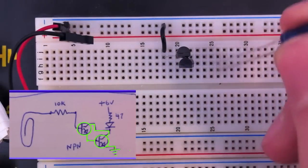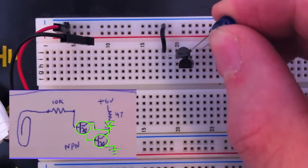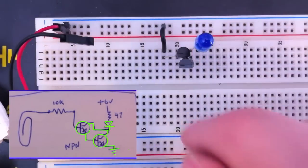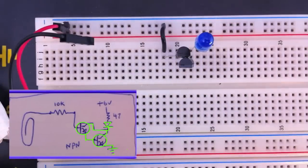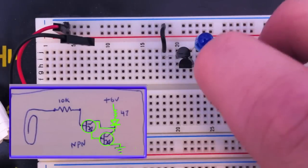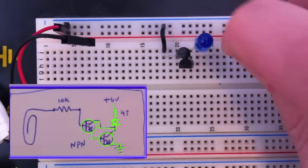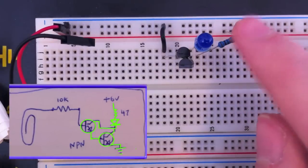Next we'll connect the cathode of the LED to the collectors—that's the negative side of the LED. To the positive side, we'll connect our 47 ohm resistor and connect the other side of the resistor to a 6 volt source, or whatever source you're using.